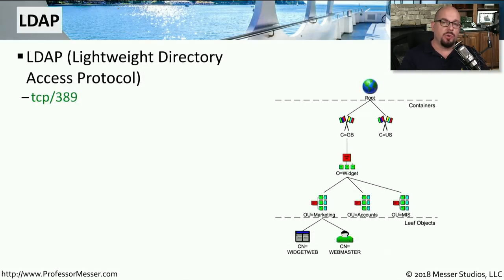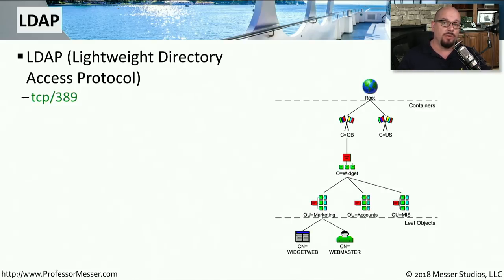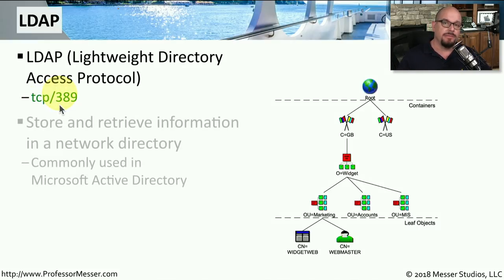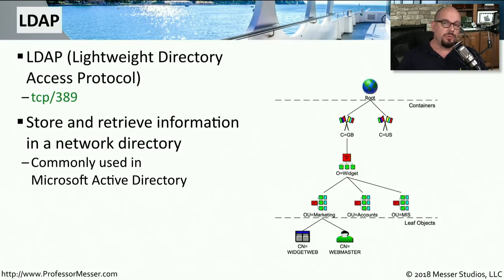If you connect to a corporate network for the first time, you're often asked to provide a username and password. The same thing occurs if you connect through a VPN or log into a web server on the network. This authentication is usually to a centralized database. One very common form of database used for this is LDAP, the Lightweight Directory Access Protocol, which uses TCP port 389. This means you can store all of your credentials in one single database, and if you ever need to enable, disable, or make any changes, you simply make them in that one centralized location.